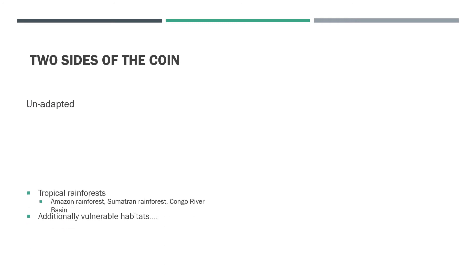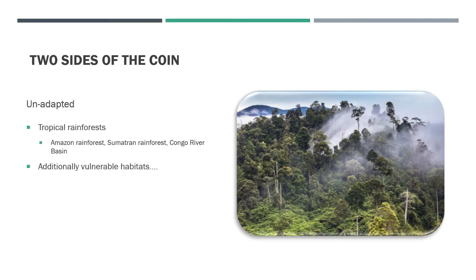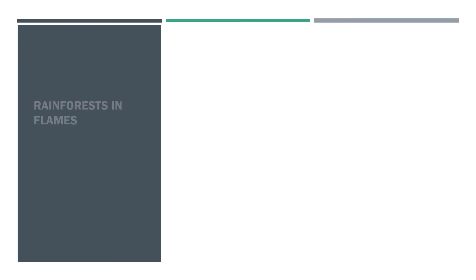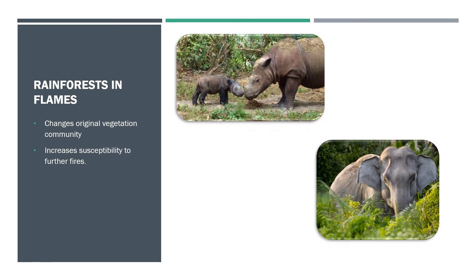Now onto the second grouping of ecosystems. These ecosystems are considered unadapted and are largely made up of tropical rainforests, such as the Amazon rainforest, the Sumatran rainforest, and the Congo River basin. Rainforests are some of the most species-rich and biologically diverse ecosystems in the world, and many species that live within these ecosystems are found nowhere else in the world.